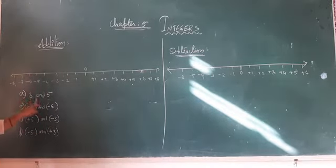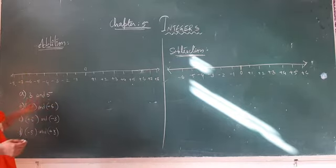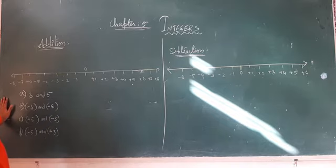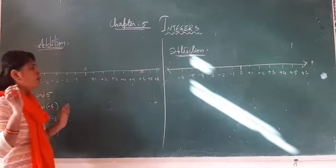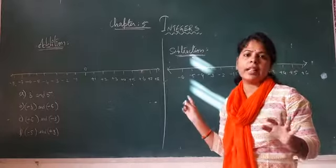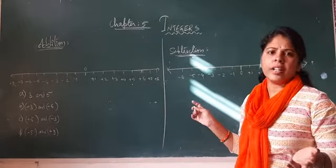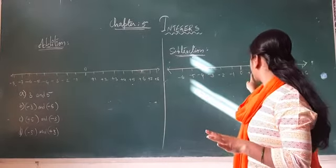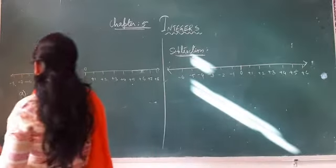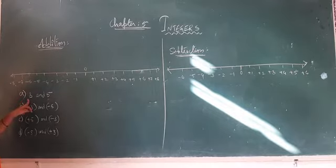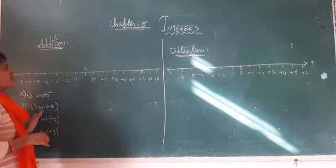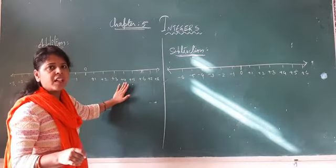The first example given is 3 and 5 — add 3 and 5. When it is given only 3 and 5, there is no sign mentioned for them. So when you are mentioning integers, the plus sign and the minus sign are very important to mark. If you mention the plus or minus sign, you can be clear about whether it is a positive or negative integer. If it is not mentioned, it is understood to be a positive integer.